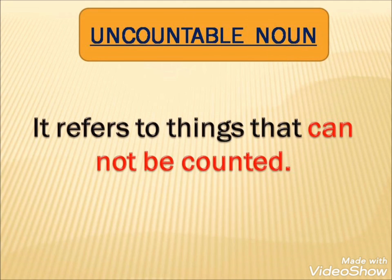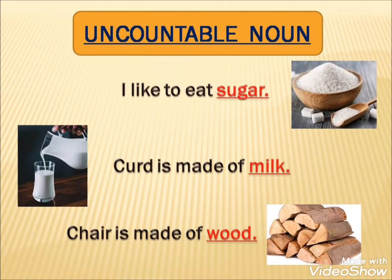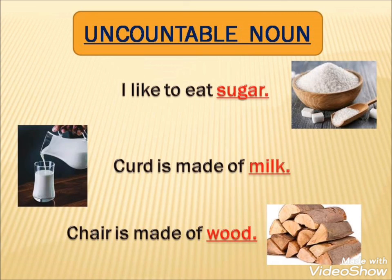Let's see the examples of Uncountable Nouns. 'I like to eat sugar.' 'Curd is made of milk.' 'Chair is made of wood.' In these sentences, sugar, milk and wood are Uncountable Nouns — they cannot be counted. These are the examples of Uncountable Nouns.